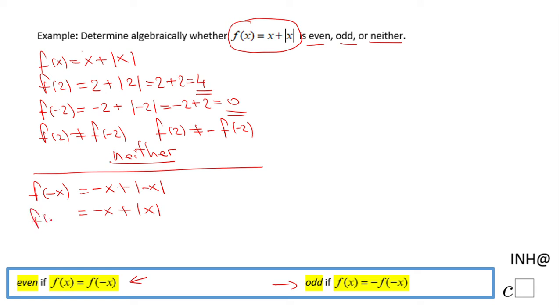Looking at these expressions, f(x) is also not equal to the opposite of f(-x). So this is the algebraic way to prove that this function is neither even nor odd.